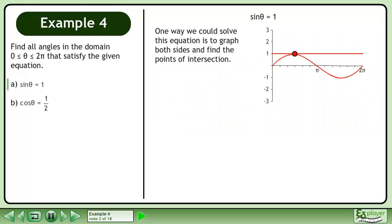One way we could solve this equation is to graph both sides and find the points of intersection. This would yield one solution at π over 2.